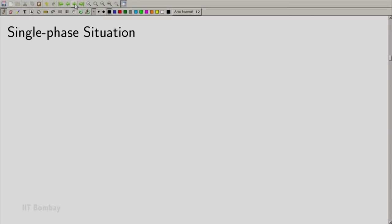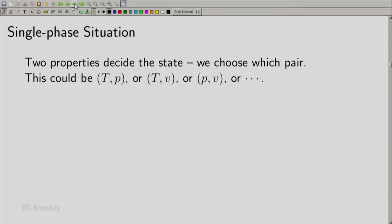So let us restrict ourselves to a single-phase situation. Remember that for any simple compressible system, we need any two properties to determine the state — the choice of the pair is with us. We can use temperature and pressure, or temperature and volume, or pressure and volume — actually any two properties. Thermodynamics does not put any restriction on that, with some minor restrictions we will see later.